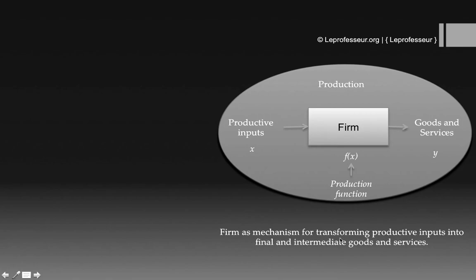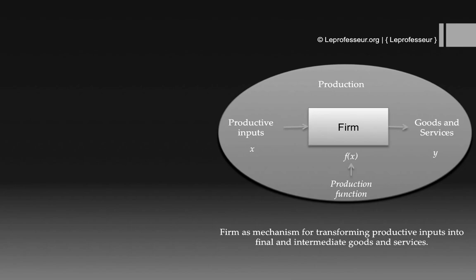We can say that a firm is a mechanism for transforming productive inputs into final or intermediate goods and services. For example, think about a chocolate factory: it takes raw materials — say sugar, cocoa, and other materials — to manufacture chocolate. The firm applies the production function and produces the output, which is chocolate.